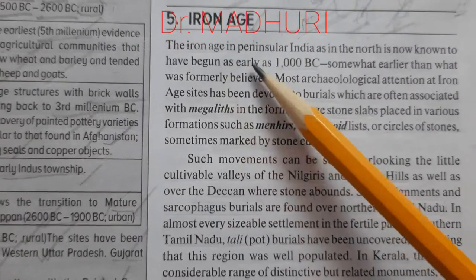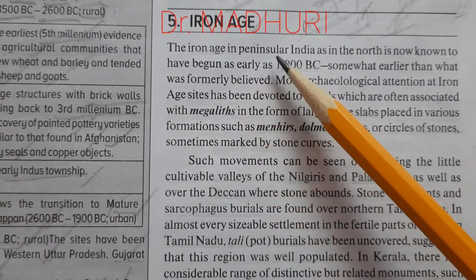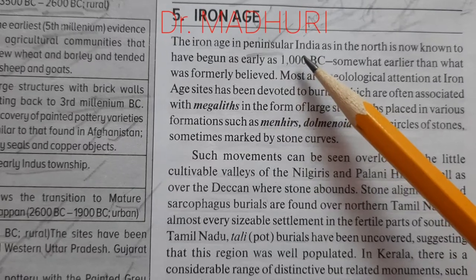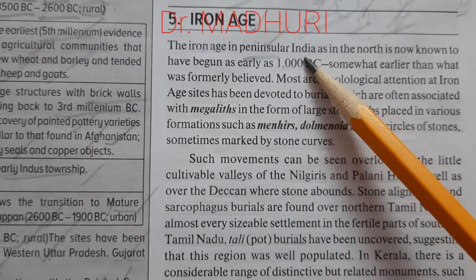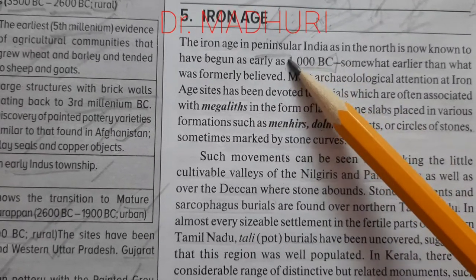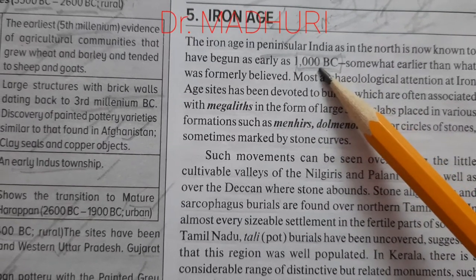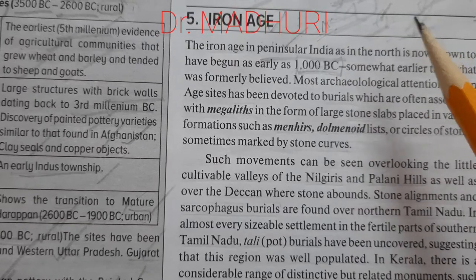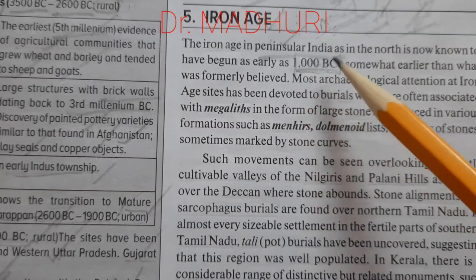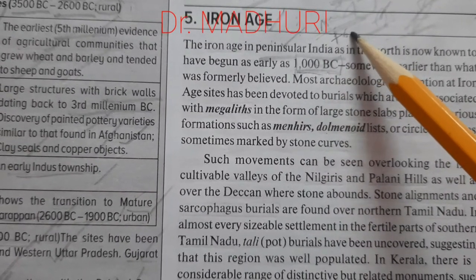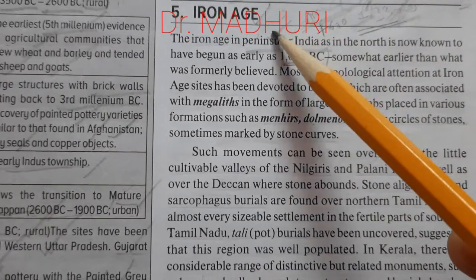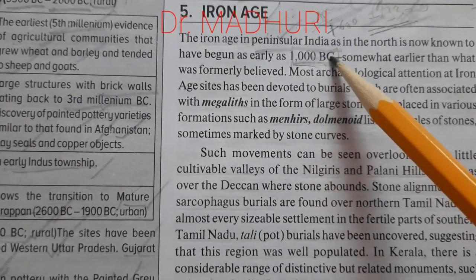The Iron Age in peninsular India — that is South India — as in the North, is now known to have begun as early as 1000 BC. This date has to be remembered because that was when the Iron Age began. The Neolithic and Chalcolithic periods were varying till 1000 BC, having started around 7600 BC to 3300 BC. The Iron Age began after that in 1000 BC and extended into AD also.